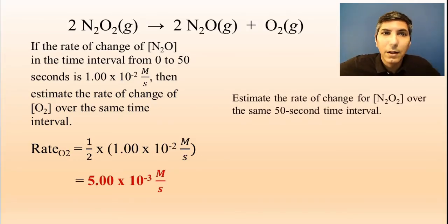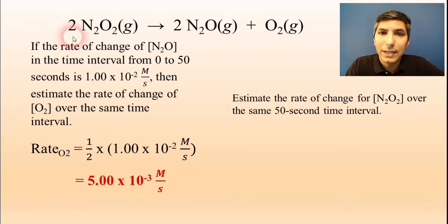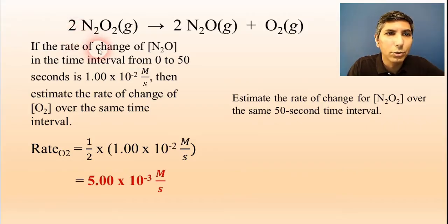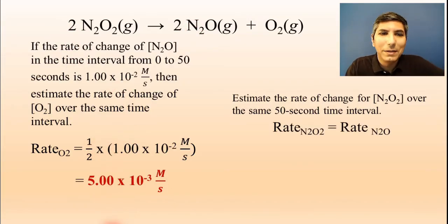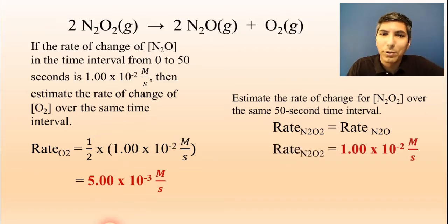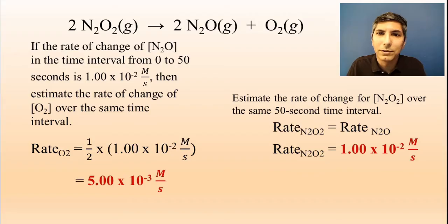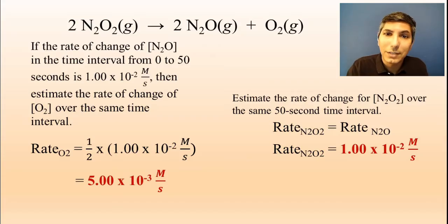Let's estimate the rate of change for N₂O₂ over that same 50-second time interval. Notice that this time the coefficients are the same — it's a 2 to 2 ratio. So whatever the rate of N₂O was, N₂O₂ is going to be the same: also 1.00 × 10⁻² molarity per second. You can use the coefficients of the balanced equation as a ratio to determine the relative rates of reaction of the different substances.